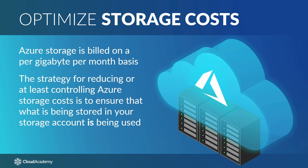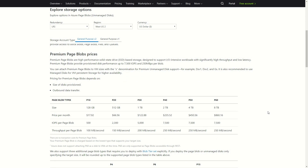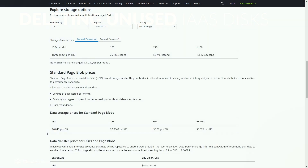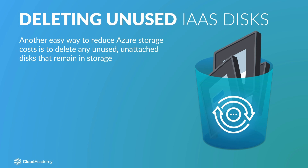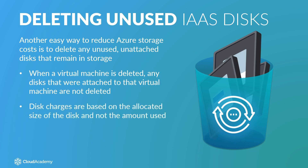If you are using Azure to host IaaS virtual machines, you have two choices for disk storage: unmanaged and managed disks. Unmanaged disks are stored as page blobs in your storage account. The cost for page blobs depends upon the amount of page blob storage used, IaaS per page blob, throughput per page blob, and on the type of disk — premium SSD or standard HDD. Another easy way to reduce Azure storage costs is to delete any unused unattached disks that remain in storage. It's important to realize that when a virtual machine is deleted, any disks that were attached to that virtual machine are not deleted, and you will still incur charges for these orphan disks that remain in your storage account. Moreover, disk charges are based on the allocated size of the disk and not the amount used.